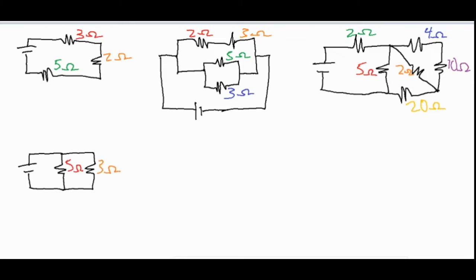They go through a three, two, and five ohm resistor, so all you're going to do is sum those three numbers up and then you have your answer: 10 ohms for your total resistance, or equivalent resistance, for that circuit.